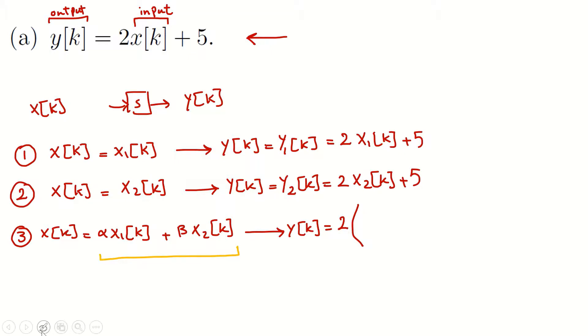So 2 times input means 2 times alpha x1k plus beta x2k plus 5.